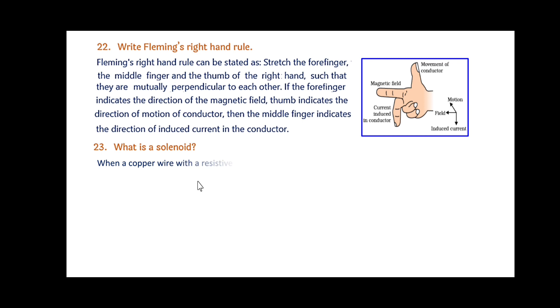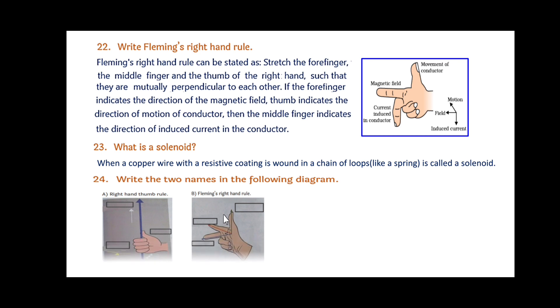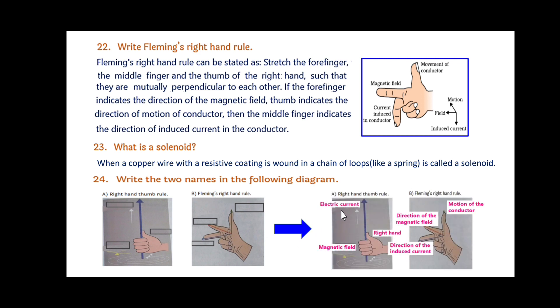What is a solenoid? When a copper wire with a resistive coating is wound in a chain of loops like a spring, it is called a solenoid. Write the two names in the following diagram. Here right hand thumb rule figure is shown and Fleming's right hand rule is shown. At the blank places in the boxes, we have to put the names. For the first figure, it is electric current direction in the case of right hand thumb rule, and magnetic field. In Fleming's right hand rule, here you can see motion of the conductor, direction of the magnetic field, and direction of the induced current.